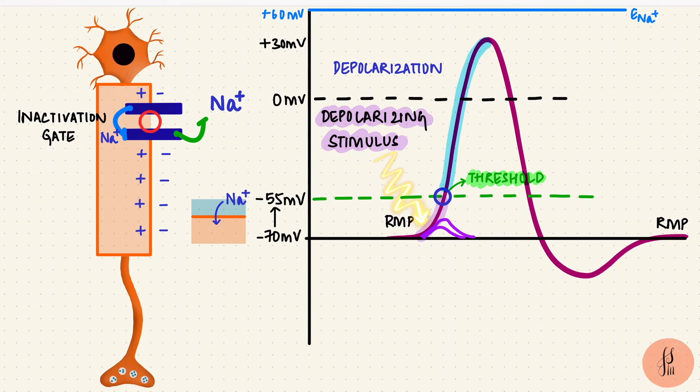So when the sodium channels start inactivating, the potential starts falling. And now we'll bring in the voltage-gated potassium channels. As the membrane depolarized from negative 70 towards zero, the potassium channels open as well. But they are slow. They are not as fast as those sodium channels. So by the time they open, the sodium channels are inactivating.